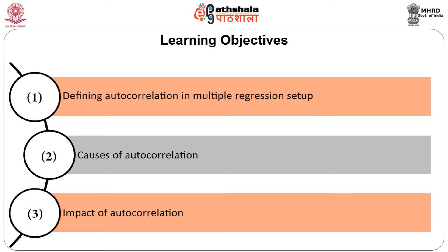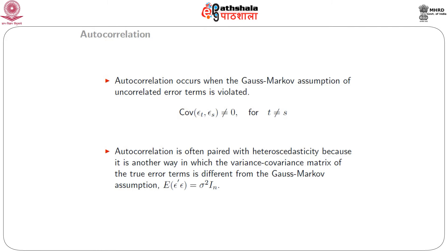In this module, we will learn what autocorrelation is, and we will see the serious consequences of autocorrelation in fitting a linear model. Autocorrelation occurs when the Gauss-Markov assumption of uncorrelated error terms is violated — that is, when the covariance between epsilon_t and epsilon_s is not equal to 0 for t not equal to s, where epsilon are the error terms in the linear model.